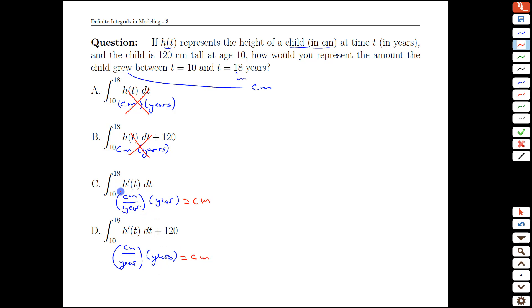So if we knew how quickly the child was growing, that's what this h prime of t is, the rate of growth, then an integral would get us back from the rate to the actual change in height.